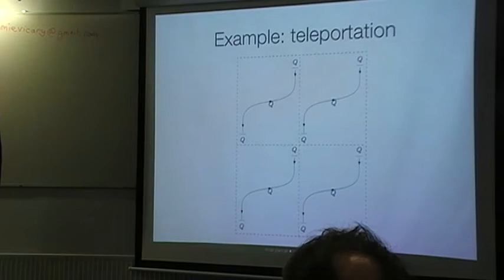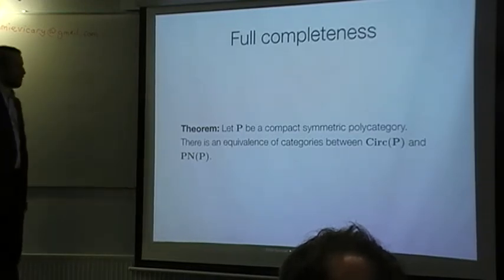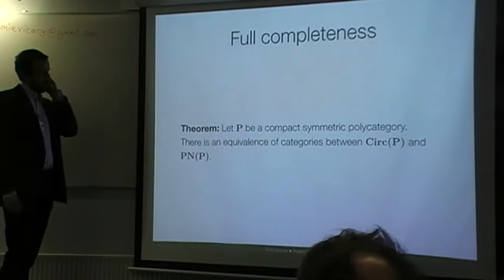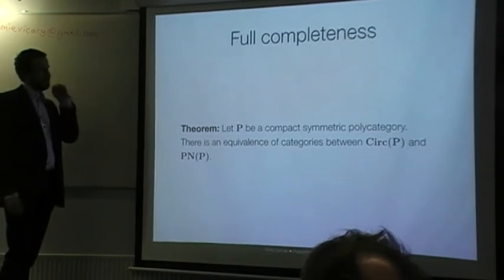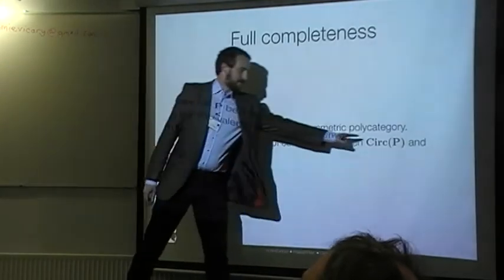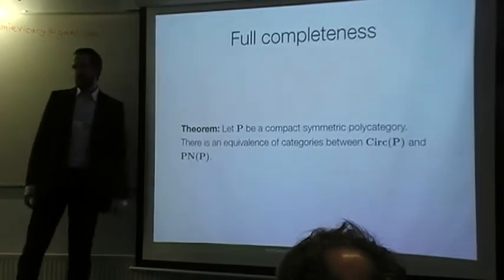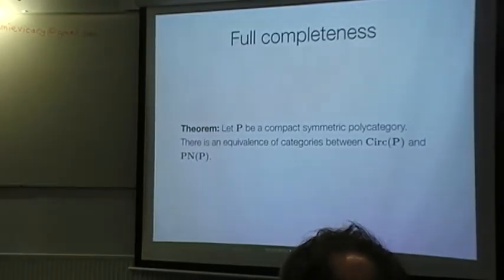Okay. So here's the theorem, which is stated in the appropriate language. So if P is a compact symmetric polycategory, that means P is a suitable collection of generators. There's equivalence of categories between the free dagger-compact thing with biproducts generated by P and proof nets with those guys as non-logical axioms. Okay. Great.